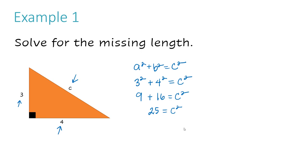Because I have C squared, I need to undo that squared and take the square root of C. I'm going to do that to both sides — whatever you do to one side, you must do to the other side. So I'll take the square root of both sides.